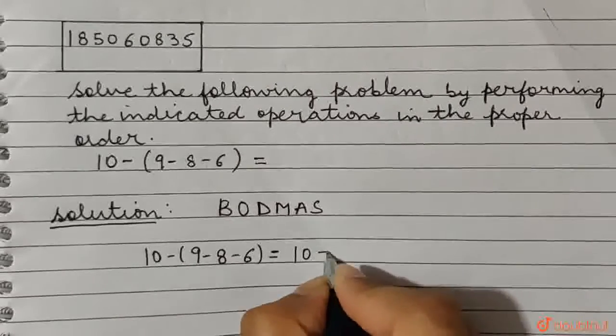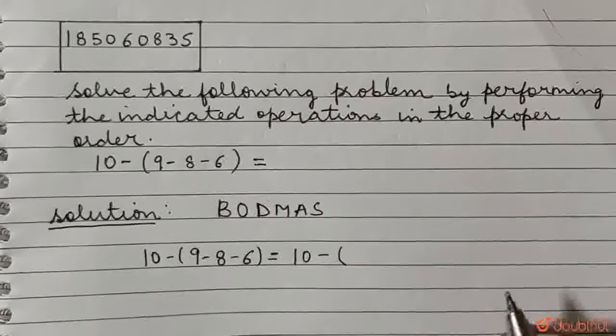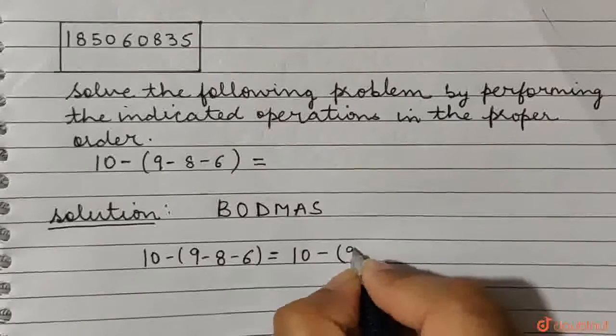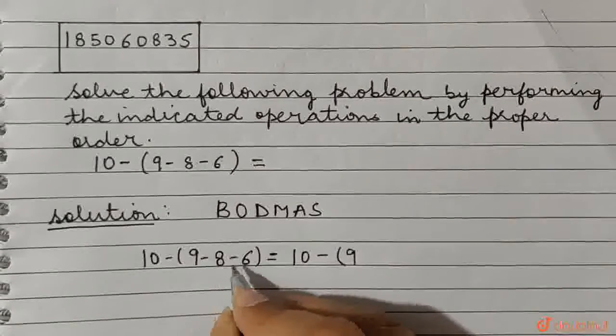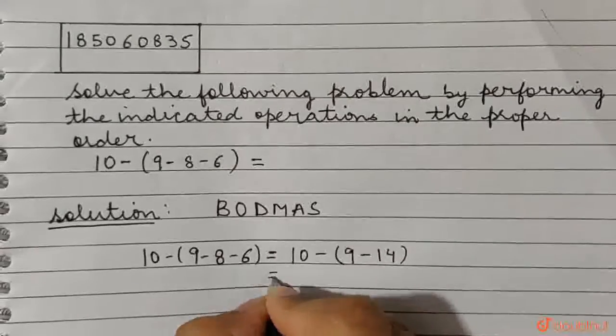That means in the brackets, we have 9 minus 8 minus 6. So 9 as it is, minus 8 minus 6, which gives us minus 14. In the next step,